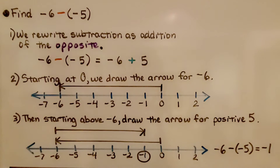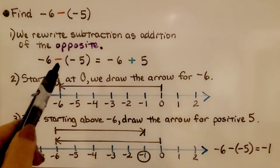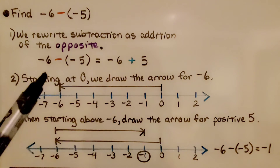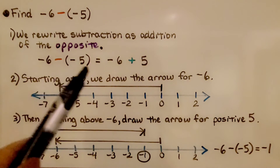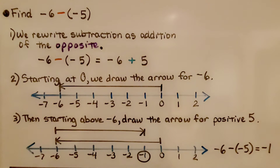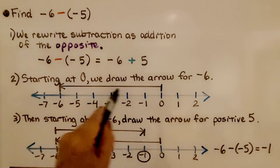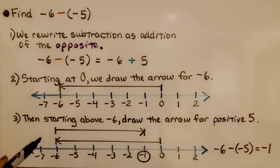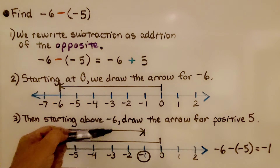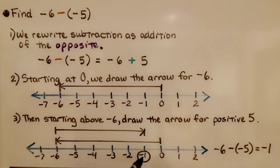We need to find negative 6 minus negative 5. We rewrite the subtraction as addition — so instead of minus something, it's plus something — and we do the opposite: instead of a negative 5, we have a positive 5. Starting at 0, we draw an arrow for the negative 6, which brings us there. Then starting above the negative 6, we draw the arrow for the positive 5, and that brings us to a negative 1. So negative 6 minus a negative 5 is equal to negative 1.